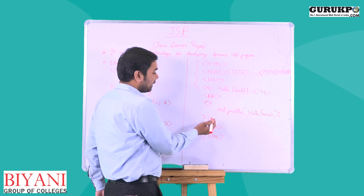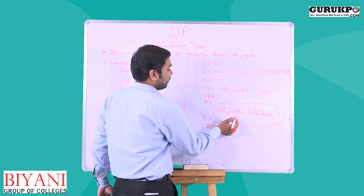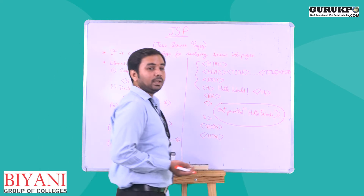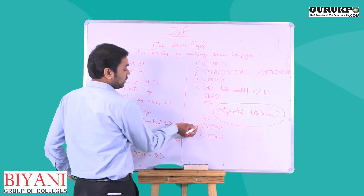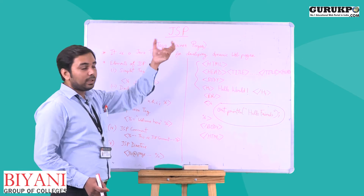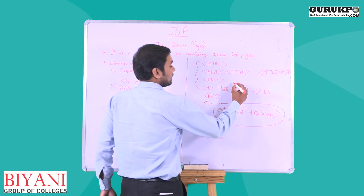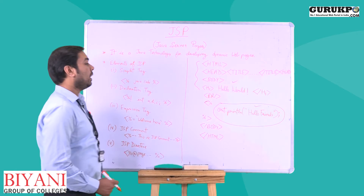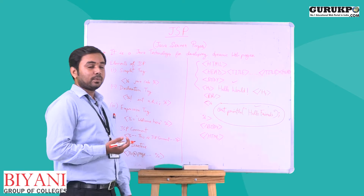I have used this scriptlet tag and written the Java code: 'out.println' with the string 'Hello Friends' followed by a semicolon to end the line. I have then closed the body and HTML tags. So this page will print two strings: first is 'Hello World' and second is 'Hello Friends'. How is this possible? It is possible due to JSP.